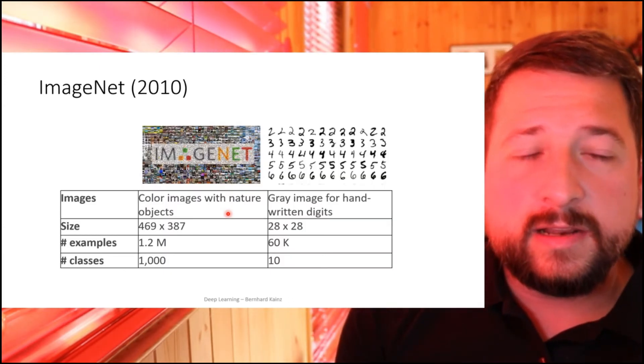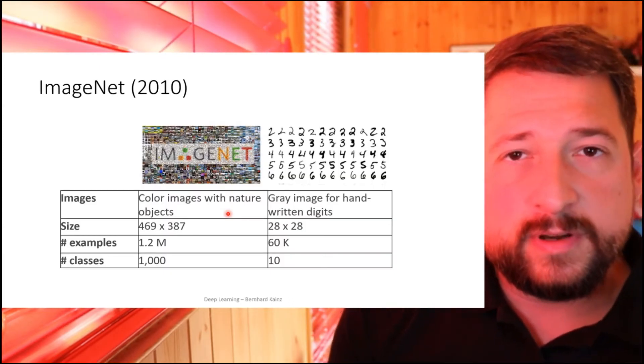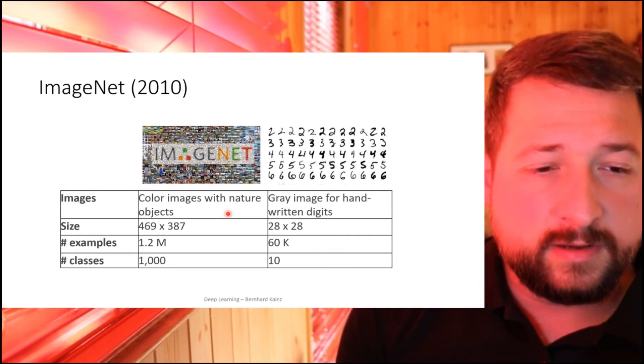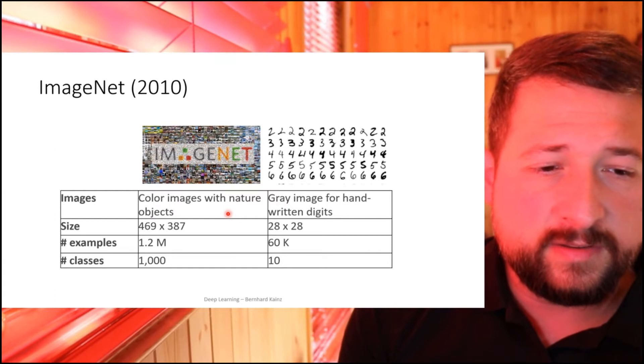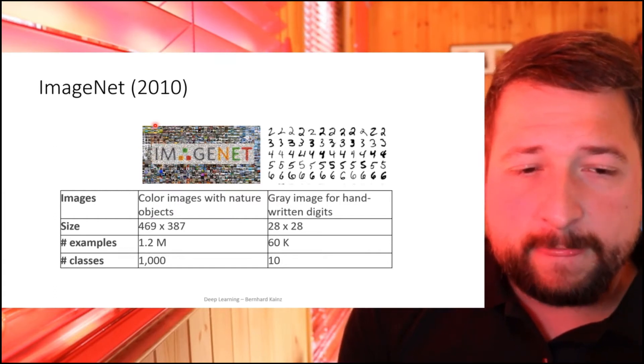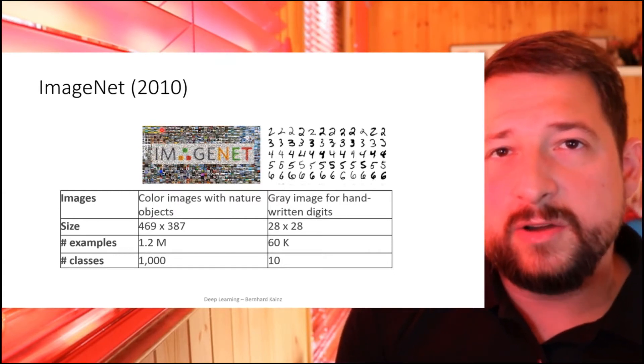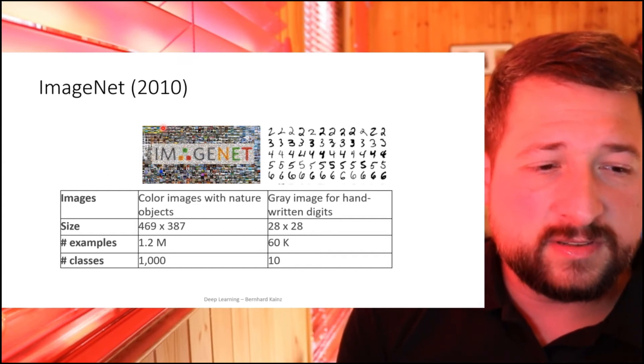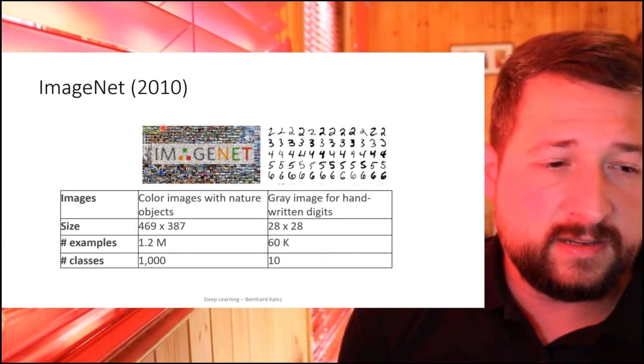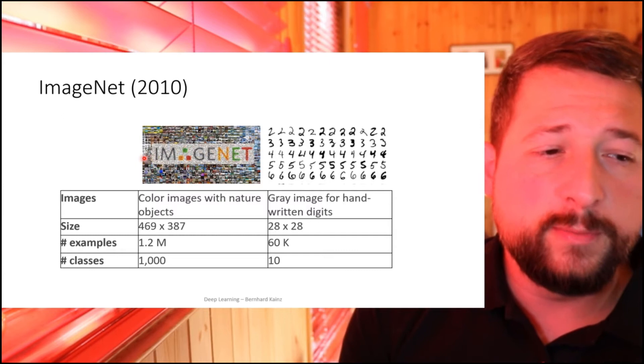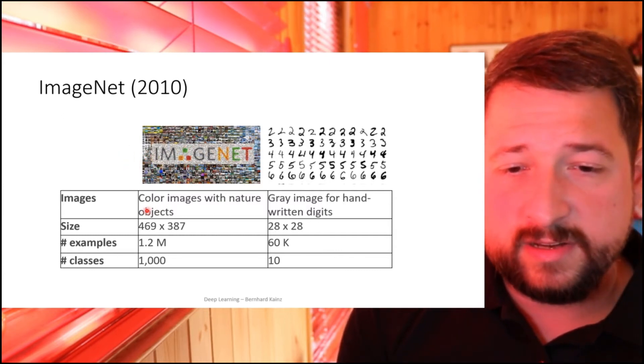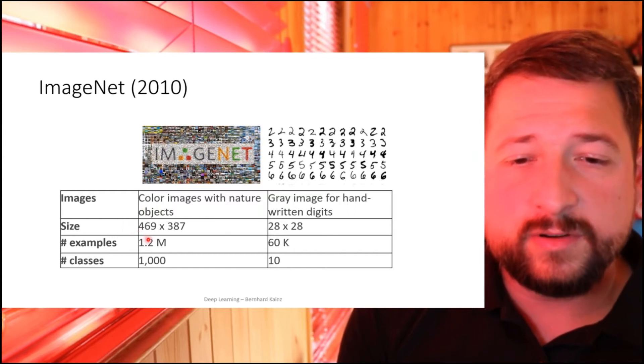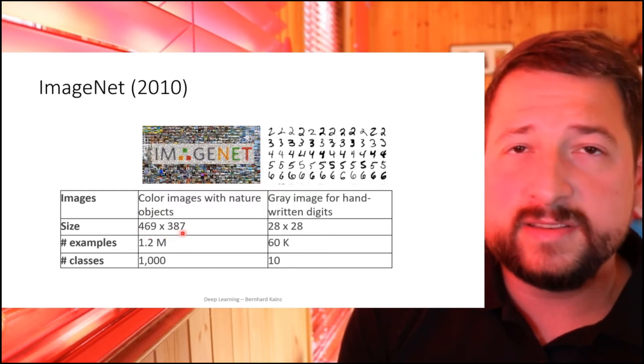Let's look at the data what AlexNet was optimized to solve and the ImageNet challenge here. This is a data set that came out in 2010, and it was a really big data set at the time with 1.2 million examples and thousands of classes. The images were of considerable size—they were 469 by 387 pixels.